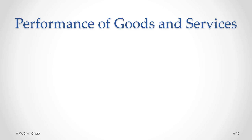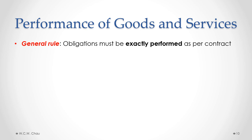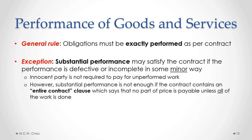What constitutes acceptable performance of goods and services under a contract? The general rule is that contractual obligations must be exactly performed as per the contract. There is a significant exception: substantial performance may satisfy the contract if the performance is defective or incomplete in some minor way. Even if that exception applies, the innocent party is not required to pay for the unperformed work. Substantial performance also does not apply where the contract contains an entire contract clause, which explicitly says that no part of the price is payable unless all of the work is done.